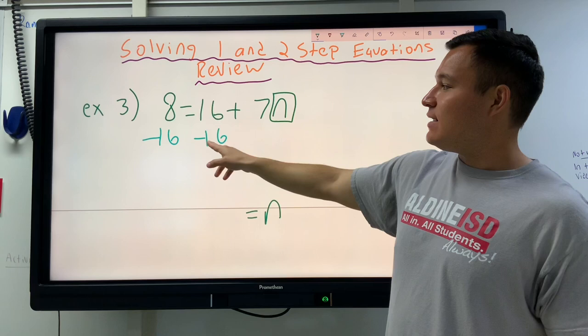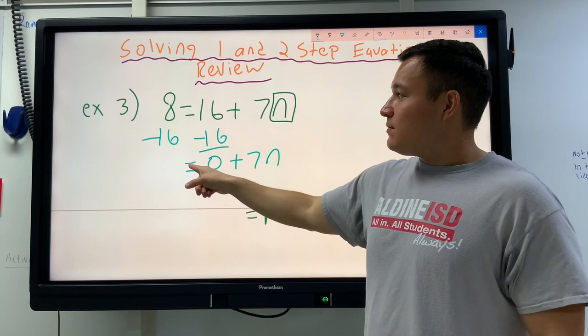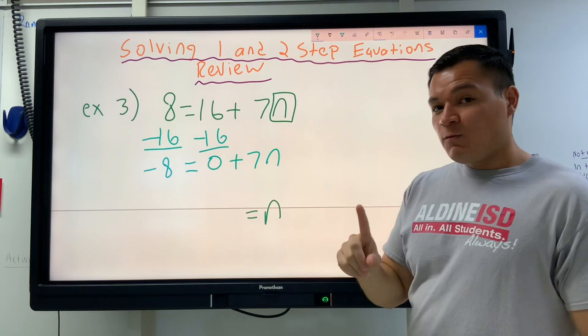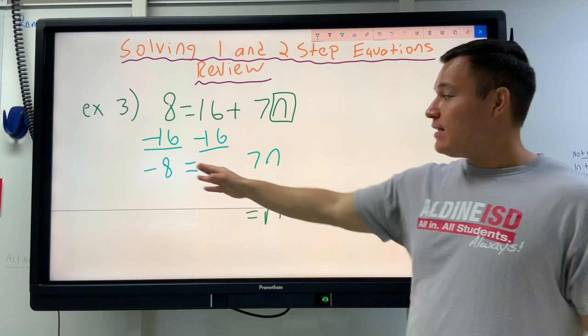A plus 16 and a minus 16 are going to make 0, and then we're going to copy this part with the 7N because we didn't change it. We're going to copy the equal sign, and then we have to figure out 8 minus 16, and that's negative 8. So this is our new equation that we have to solve now. We just did one step, and this is called a two-step, so that means we only have to do one more thing. Since we're adding 0, I don't really need to have that. I'm just going to save myself some space.